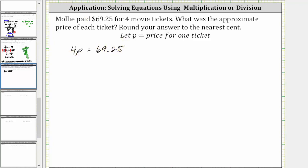And now to solve for p, we divide both sides of the equation by four. Simplifying, four divided by four simplifies to one. One times p is p. p is equal to $69.25 divided by four. And now we need to find this quotient and round to the nearest cent.